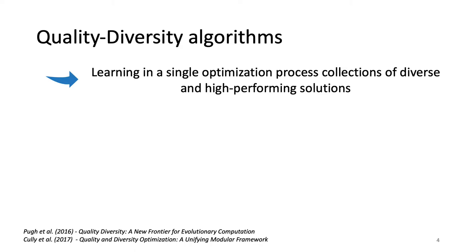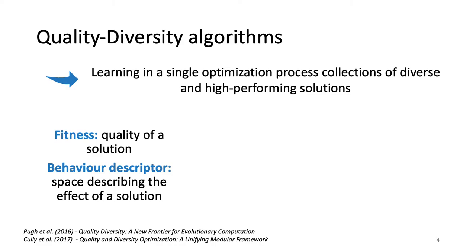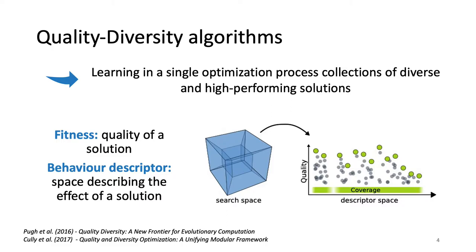The quality of a solution is quantified by the fitness, and to quantify the diversity of a solution, quality diversity algorithms make use of a behavior descriptor space which describes the effect of a solution. The idea of quality diversity algorithms is to optimize both the quality of the solution and the coverage of the descriptor space, so the final solution will be the overall collection.